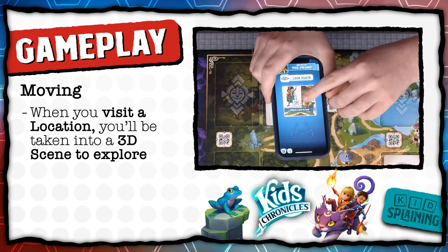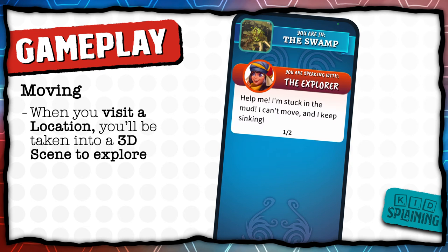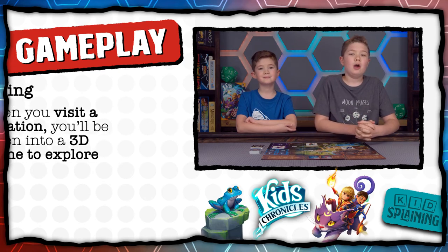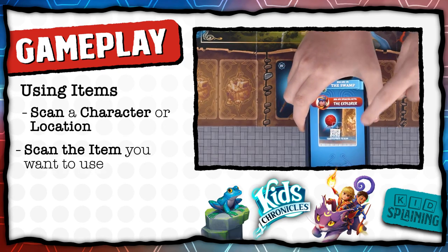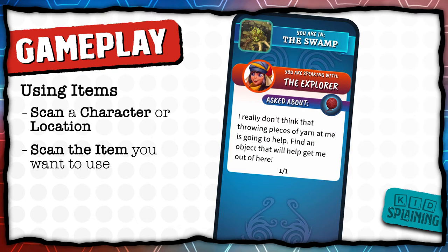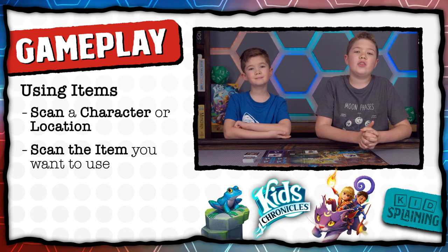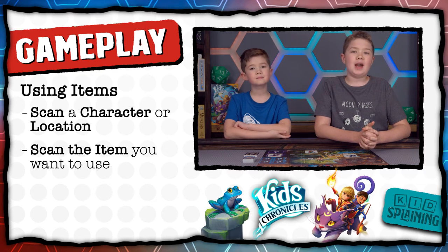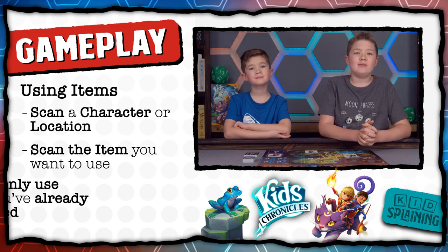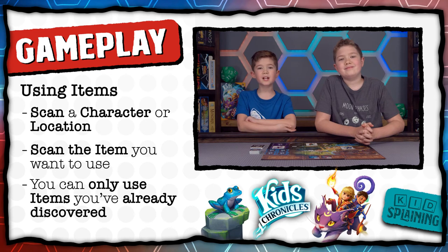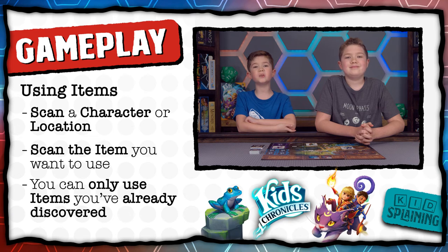Now you can scan this character to talk to them and ask them about other things on the board. Sometimes you need to use items that you've found. When we talk to this character, they say that they're stuck in the swamp and need help getting out. So maybe we can throw this ball of yarn at them and pull them out. We'll try that by scanning the yarn while we're talking to them. That didn't help — which isn't surprising because it's a ball of yarn — but that's how you would use an item while you're interacting with a character. You might also see an action button pop up in the app, like if you see a climb button, you could tap it and then scan an item to try to climb with, like a ladder. But remember, you can only use items that you've discovered and put in one of these spots at the bottom of the board. If you try to scan a card that you haven't discovered yet, it won't let you use it.